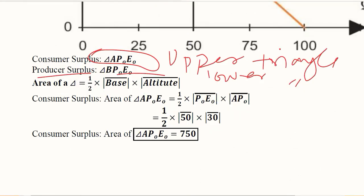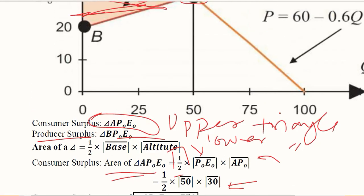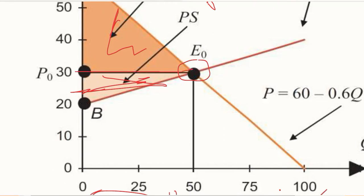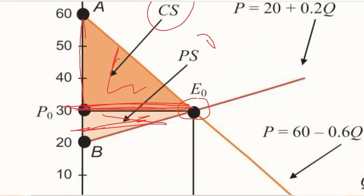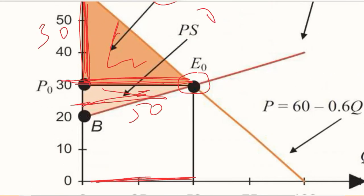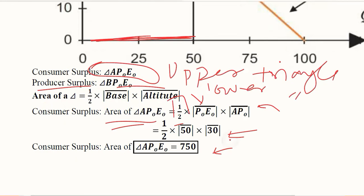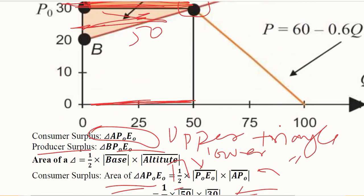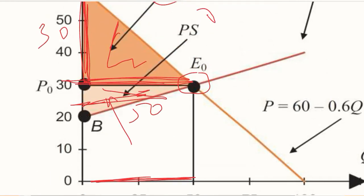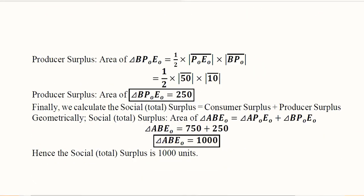To find out the consumer surplus we can use the area of triangle formula — multiplying one-half by the base and the altitude. If we do this we get the consumer surplus, which in this case is 750. The base is 50, and the other values are 30 and 60, which gives a height of 30. So 30 times 50 divided by 2 gives the consumer surplus. I can find the area of this triangle — the consumer surplus — using the simple formula for a triangle.